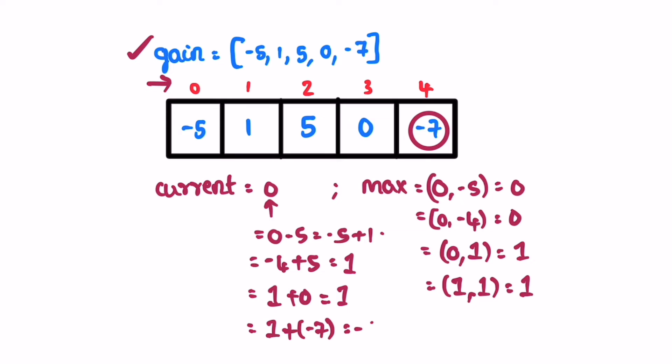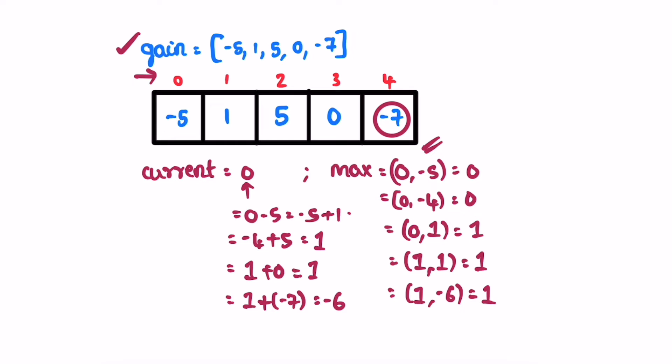To the current value, we get minus six. We check it with the current max. Max will remain as one. Finally, we reach the end of the for loop and return whatever is present inside the max variable.